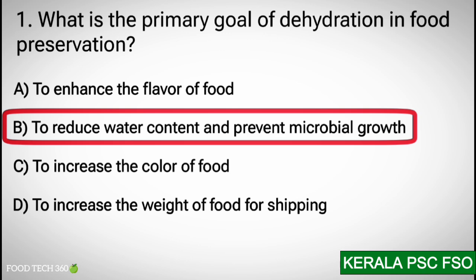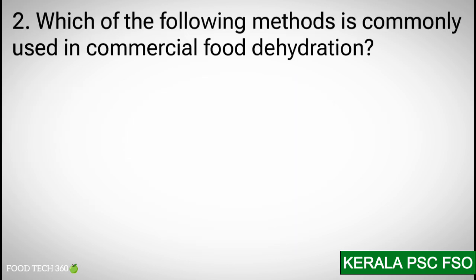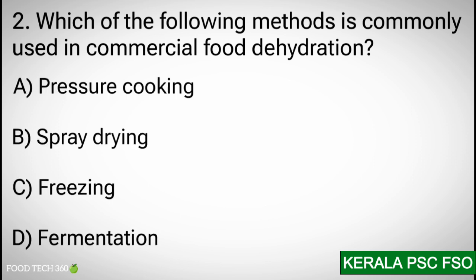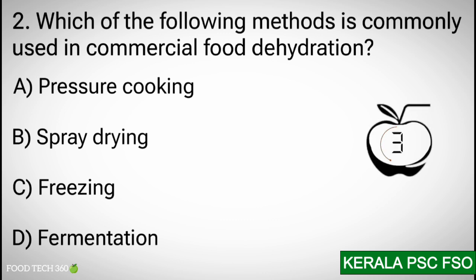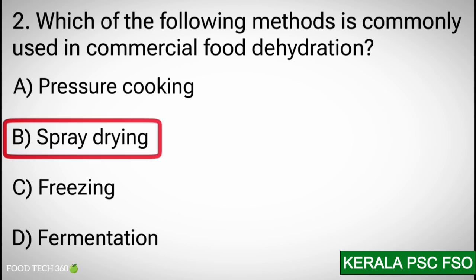Q2: Which of the following methods is commonly used in commercial food dehydration? Options: A. Pressure cooking. B. Spray drying. C. Freezing. D. Fermentation. Correct answer: B. Spray drying.